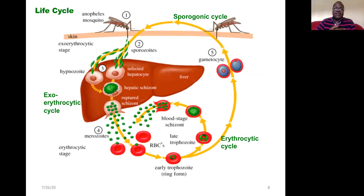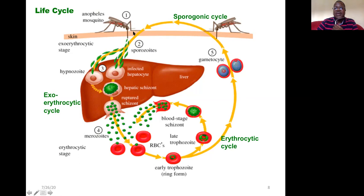Now let's look at the life cycle — how this happens when you become exposed. Everything starts with the bite from an infected female Anopheles mosquito. It bites through the skin and introduces the parasite, Plasmodium, at a stage called the sporozoite. The sporozoite then very quickly gains access to the liver.